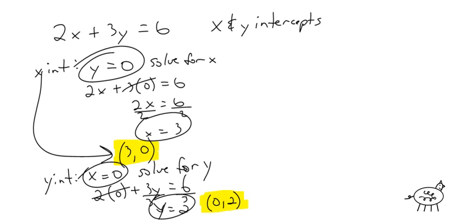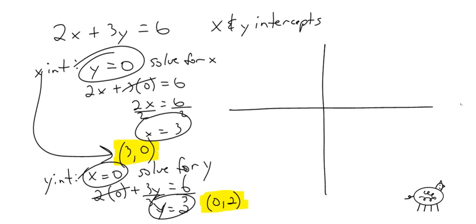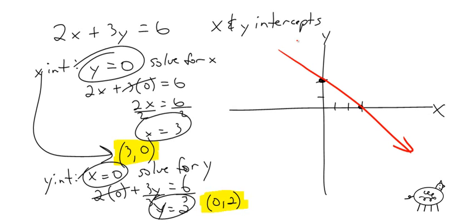Then you're going to graph this — that's what I'll ask you to do. Come up with the x and y intercepts, then graph it. Let's plot: 3, 0 is right here — that's my x-intercept, crossing the x-axis. The y-intercept is 0, 2, right there, crossing the y-axis. Then you sketch a line connecting those two points. That's your graph.